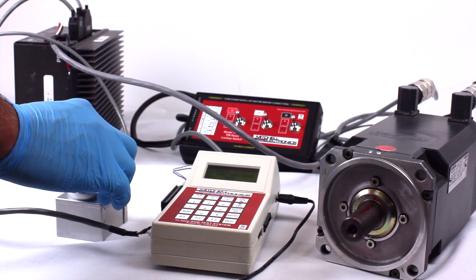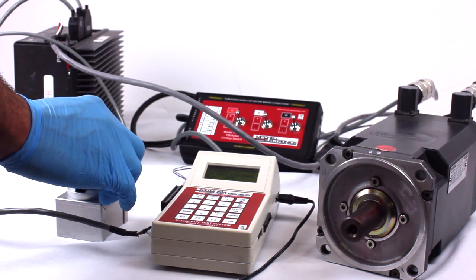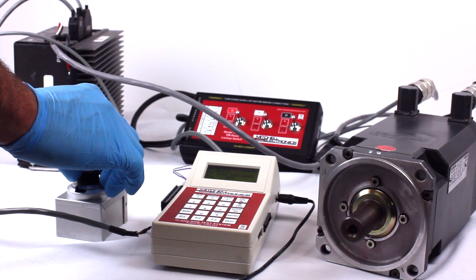Turn the potentiometer clockwise and the motor will turn in the forward direction. For Siemens motors, this is also clockwise.